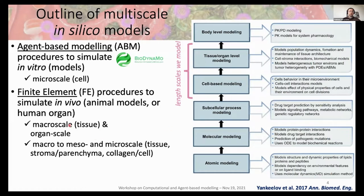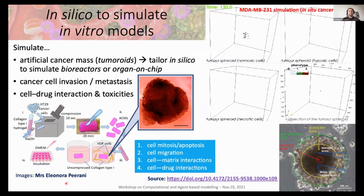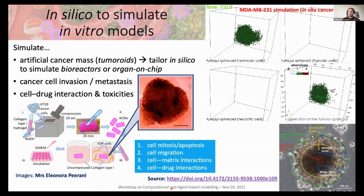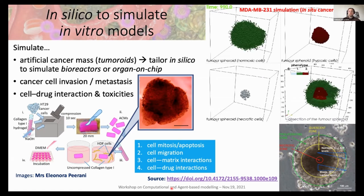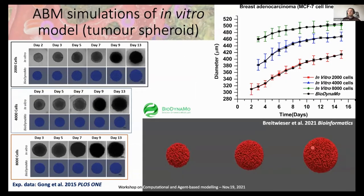In the following slides I will present two general classes of in silico models we are developing: agent-based modeling procedures to simulate in vitro laboratory settings, as well as procedures to simulate in vivo animal models or human organ-scale models that extend across several scales — from tissue and organ level down to the subcellular level. Let me go through some examples involving artificial cancer mass simulations, tumor cell invasion and metastasis, as well as cell-drug interaction and toxicity. Here is a demo of the development of an artificial cancer mass in vitro — these are different instances of the same simulation using BioDynaMo, and you can see the necrotic core, which quantitatively matches in vitro findings very well.